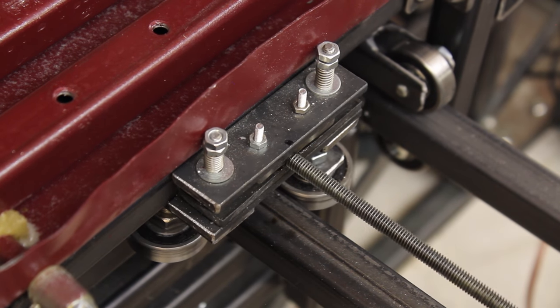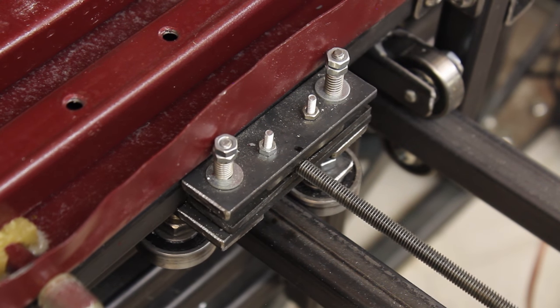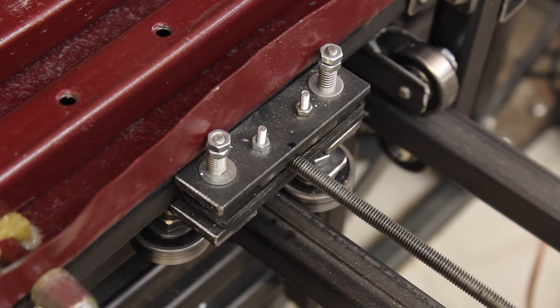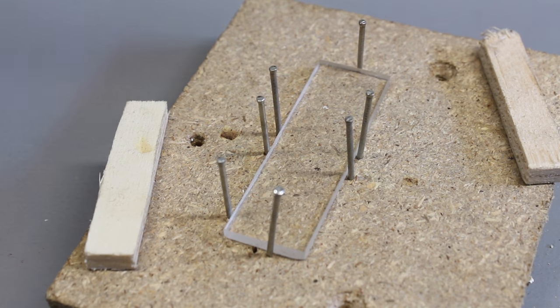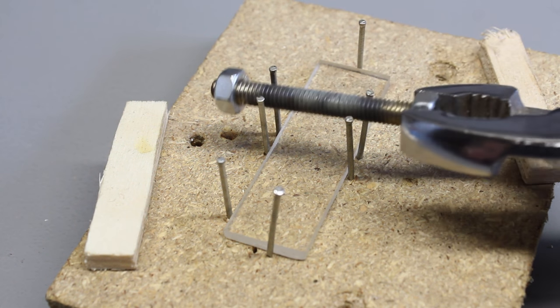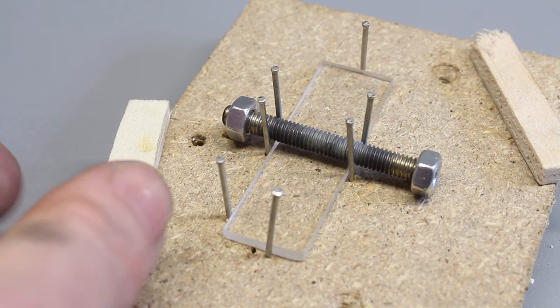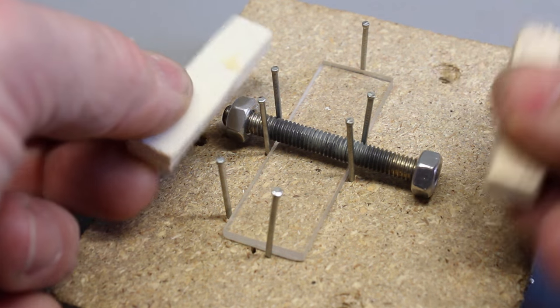The rotational movement of the motors is turned into linear movement through 6mm threaded rods. The female thread at the carriage is formed with a heated nut in a stripe of acrylic plastic.